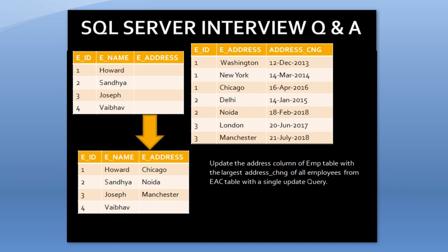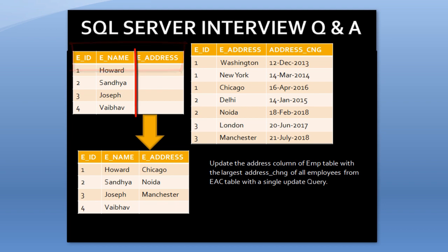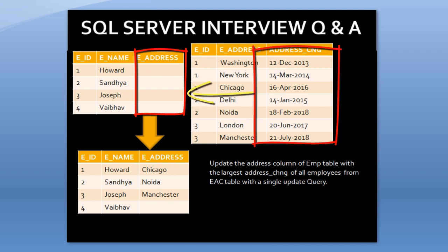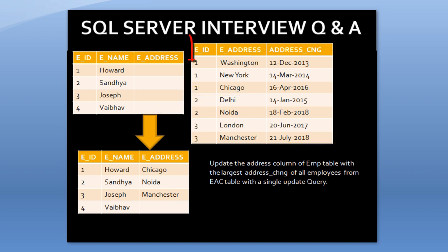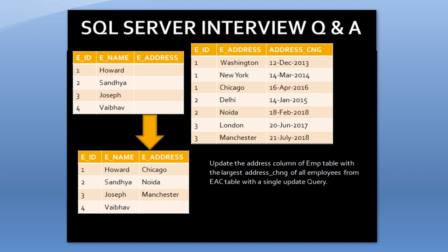As you can see, we have two input tables. The first table contains employee information with three columns: employee ID, employee name, and employee address. The employee address is blank, and we want to update it from the employee address change table. The second table, employee address change, has three columns: employee ID, employee address, and address change date. We want to pick the maximum address change date for each employee and update it in the employee table.